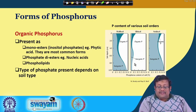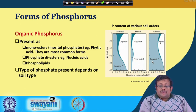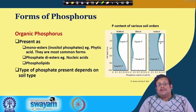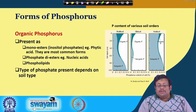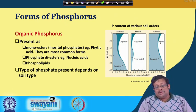Inorganic phosphorus content increases as we go to the lower depth, especially in mollisol and aridisol. The concentration of organic phosphorus and inorganic phosphorus changes with depth based on the type of soil present.